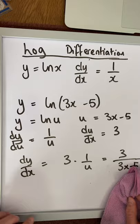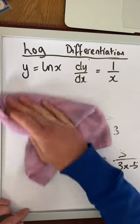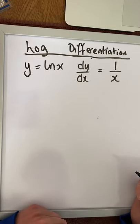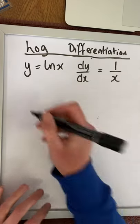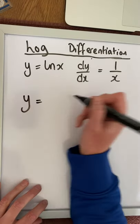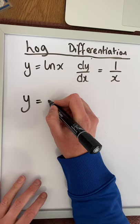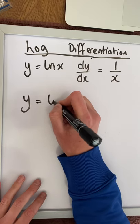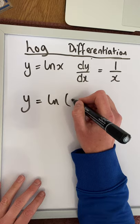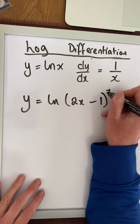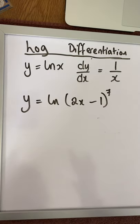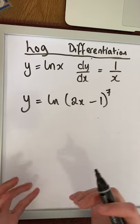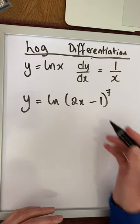In a more complicated scenario, if we look at y is equal to the natural log of 2x minus 1 to the power of 7, here we would have to use the chain rule because we have to differentiate twice.